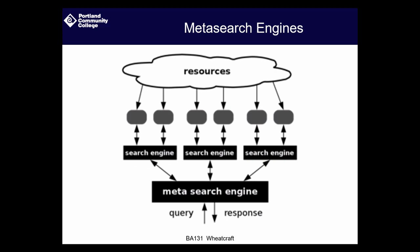A meta search engine works differently: each search engine organizes data differently, so the same search on different engines can yield slightly different results. The concept of a meta search engine is that you submit one request, and it goes out and contacts each of the other search engines, then returns a combined compiled list. Instead of having to individually search each engine, the meta search engine does that work for you.